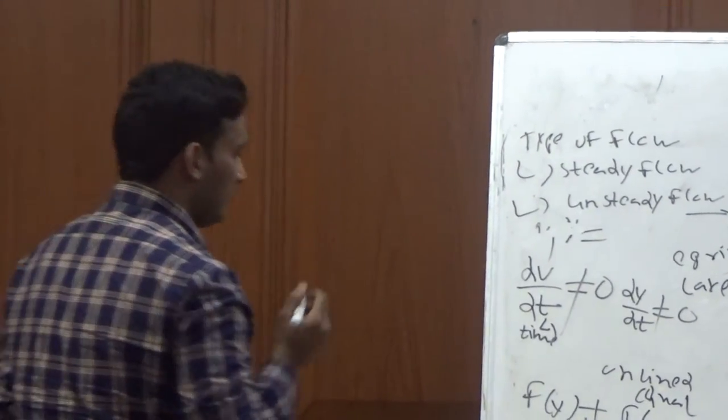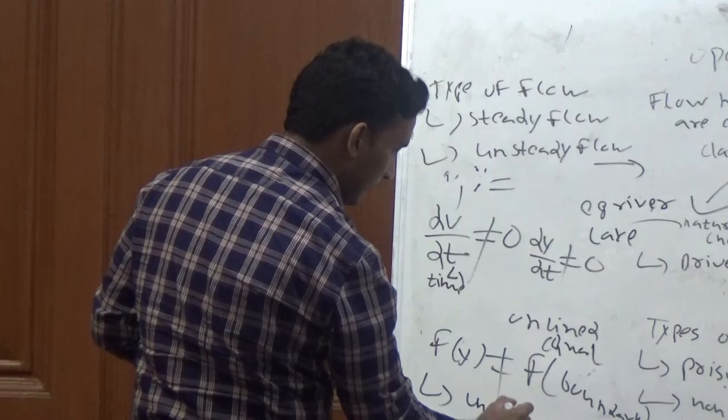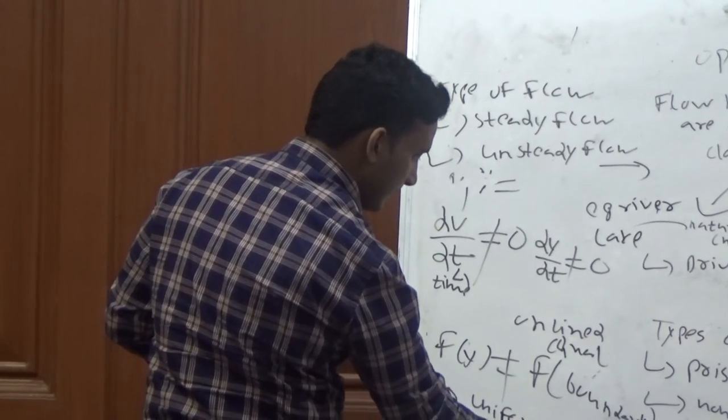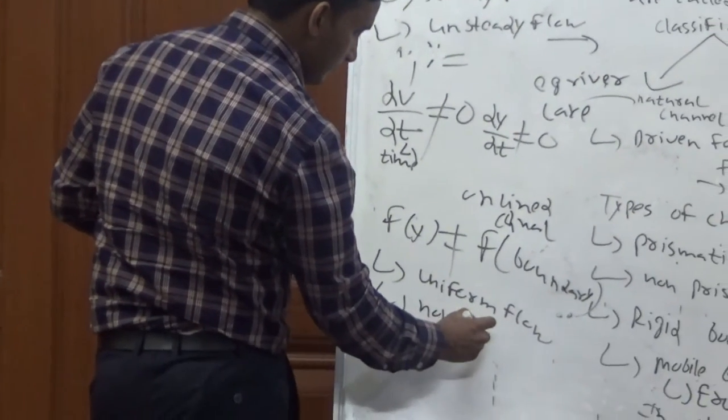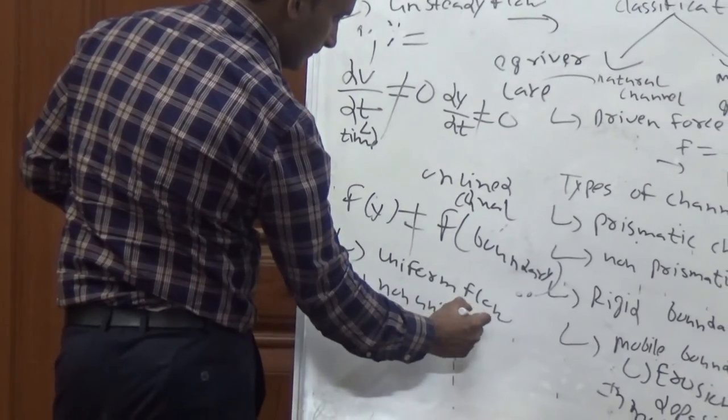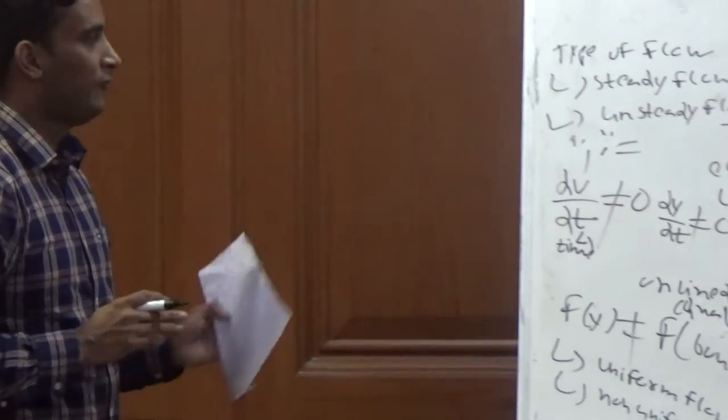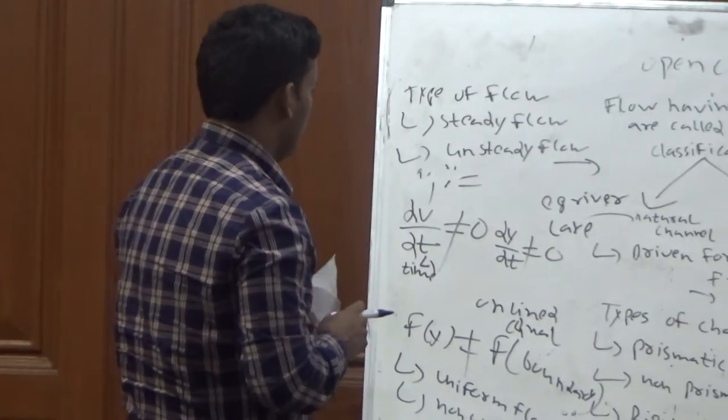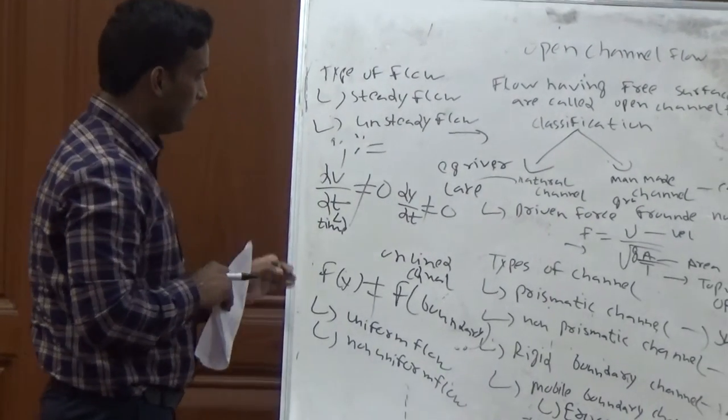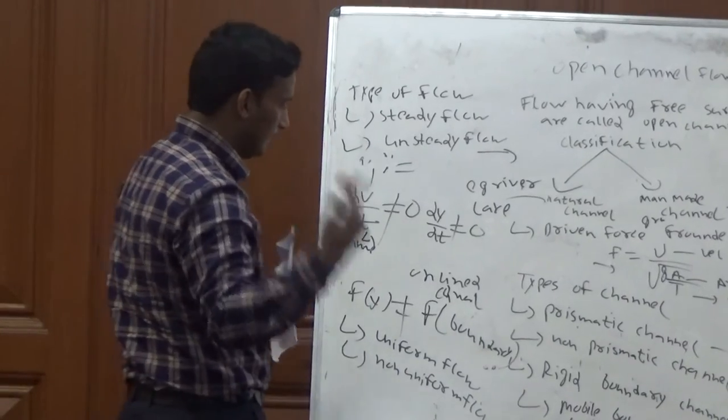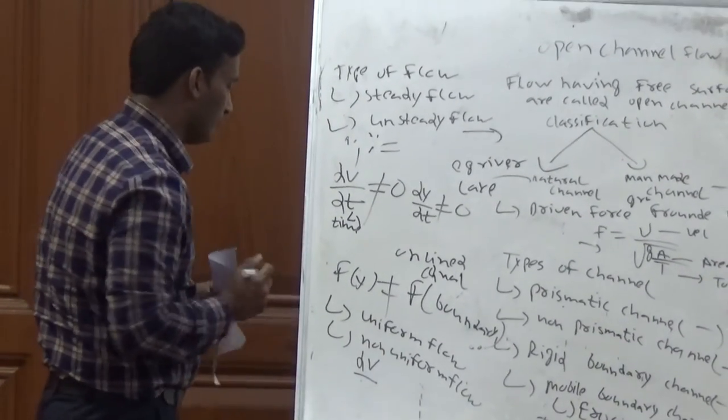Then comes uniform flow and non-uniform flow. If the flow parameters such as velocity and depth of flow are changing with respect to time, then it will be non-uniform flow.